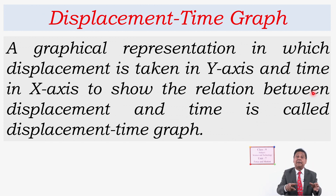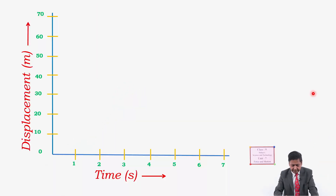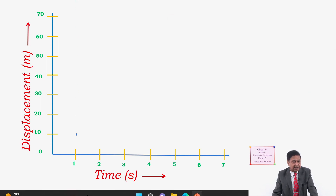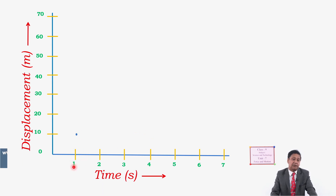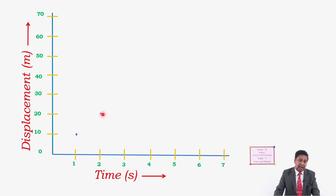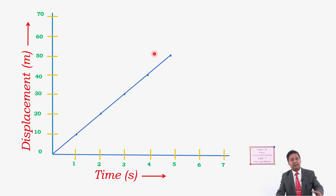Now I am going to make a graph. A body is moving in such a way that in one second it covers 10 meters distance. We mark that point, and again in the next second it covers another 10 meters, and another 10 meters in the next second. Every second the body covers 10 meters distance. When we connect all these dot marks, we get the real displacement-time graph.